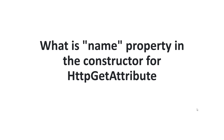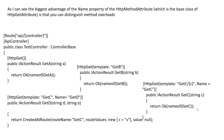Welcome to my channel ASP.NET Core. Today I'm going to show you a simple demonstration about the name property. What is the name property in the constructor for the HTTP GET attribute? Here, HTTP GET attribute is the class name and name is the constructor parameter. The biggest advantage of the name property of the HTTP method attribute, which is the base class of HTTP GET attribute, is that you can distinguish method overloads.